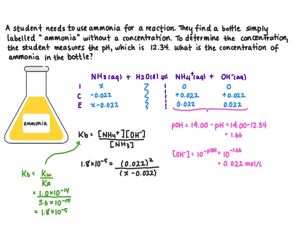So if we're solving for x we want to move our denominator up to this side of the equation. We're going to do that by multiplying on both sides and then we'll divide both sides by the Kb value. So x which is equal to our initial concentration of ammonia is going to equal 0.022 squared divided by 1.8 times 10 to the negative 5, and then we're going to add on our 0.022.